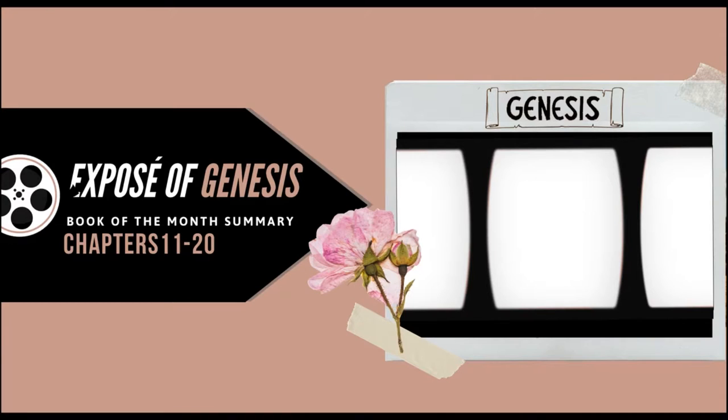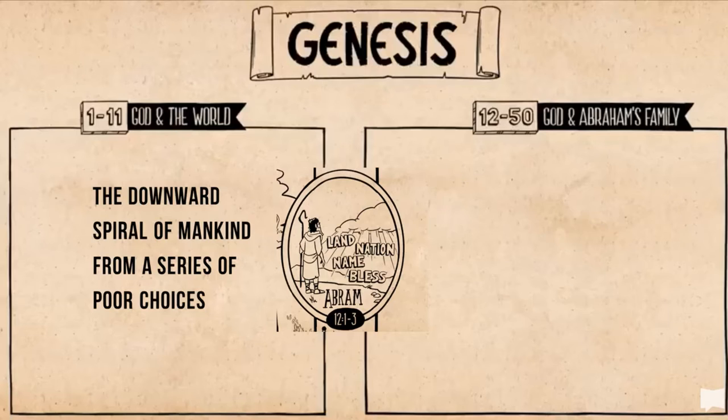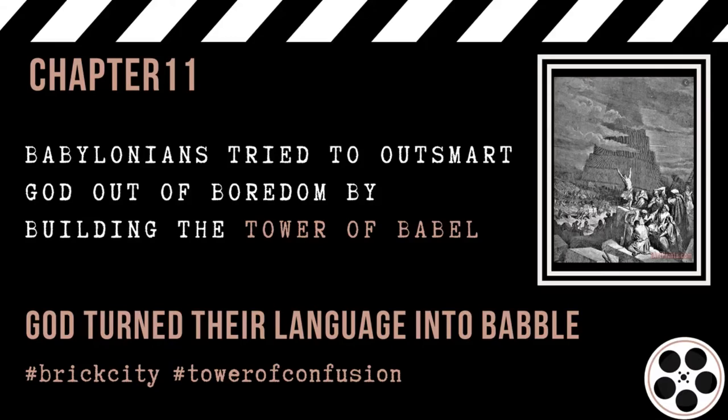I'm taking us through an exposé of Genesis, covering chapters 11 to 20. As we talked about last week, Genesis chapters 1 to 11 covered the downward spiral of mankind due to a series of poor choices. Today I'm going over what links the first and second halves of Genesis. In chapter 11, the Babylonians try to outsmart God out of boredom by building the Tower of Babel, but God scattered them and confused their languages.